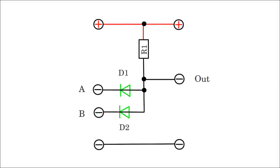The output is high, meaning at the potential of the positive supply voltage, only if both inputs are high, because now both diodes are reverse biased and the potential at the output clamp is pulled to the positive supply voltage by the pull-up resistor.